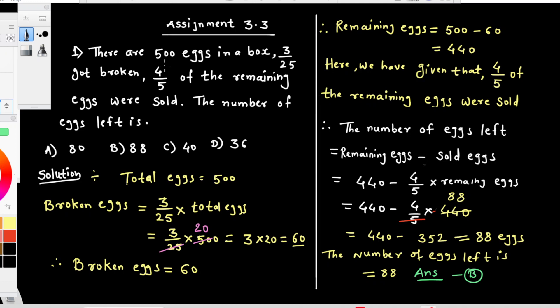There are 500 eggs in a box. 3/25 got broken, 4/5 of the remaining eggs were sold. The number of eggs left is... Here, we have to find the number of eggs.